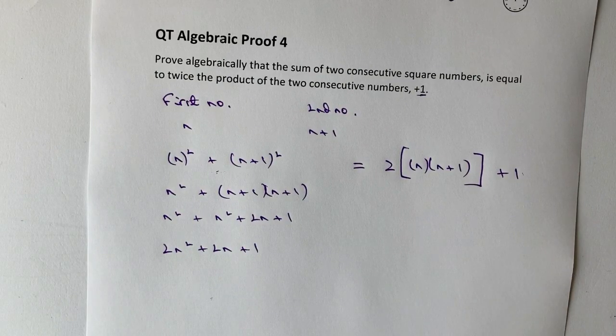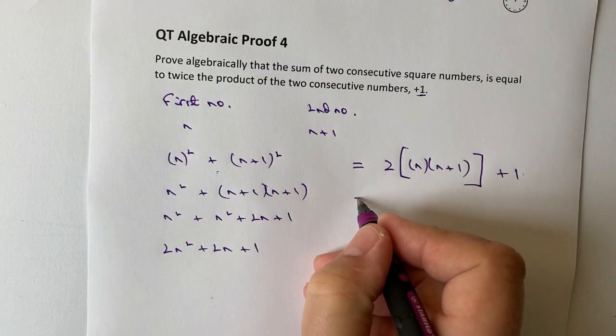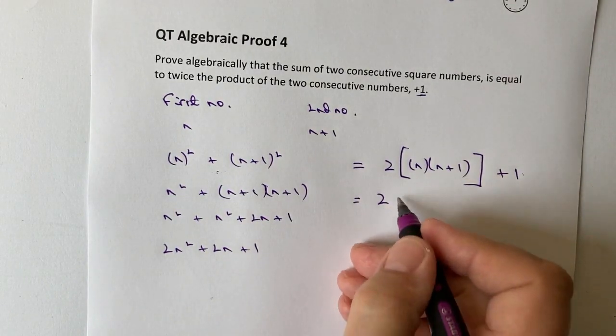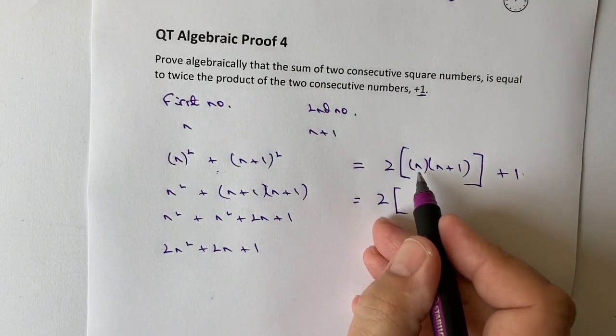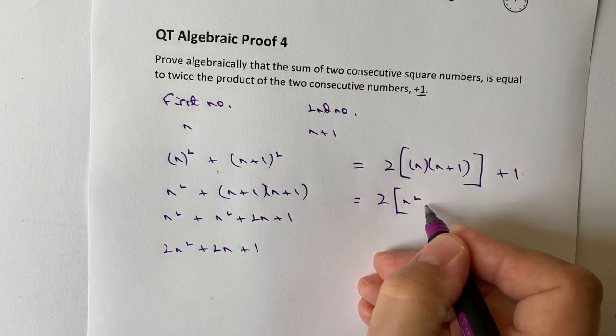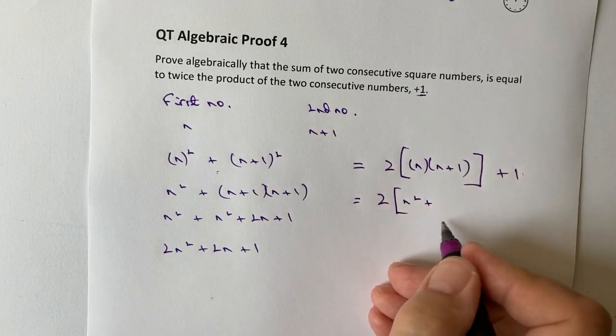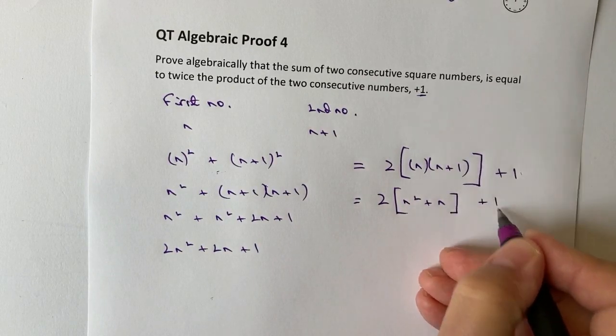So let's just multiply that out and see if it works out to be the same expression. So I'm going to look at then, I'm going to multiply out this inside the brackets first. I'll leave those square brackets in place. I'm going to get n times n is n squared, and n times one is going to be n plus one.